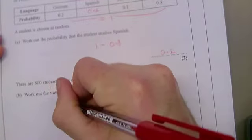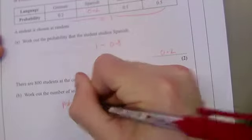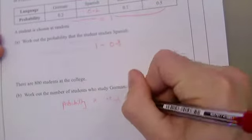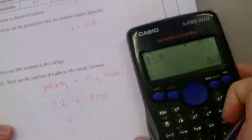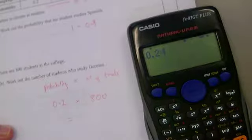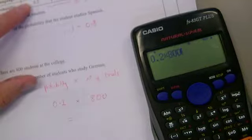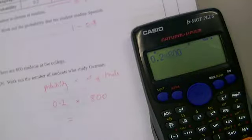What's the probability of studying German? 0.2. So what I do is I take the probability and multiply it by the number of trials. In our case, trials is the number of people studying at the college, so I want to do 0.2 multiplied by 800. So German, I look in the table - that's 160.